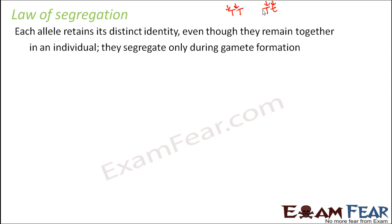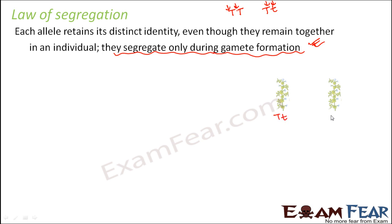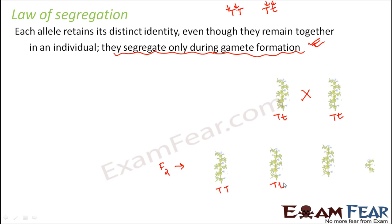Alleles never blend; they maintain their own identity. Even though they remain together in an individual, they segregate only during gamete formation. The F1 plants, which were capital T small t crossed together, produced F2 plants where most were tall but around 25 percent were dwarf. This was what was being observed.